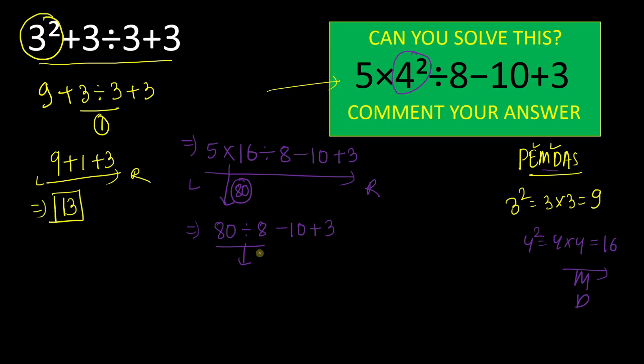So we can simply write 10 - 10 + 3. Now again, left to right here. 10 - 10 will give result 0 + 3. So we can say 3 is the right answer.